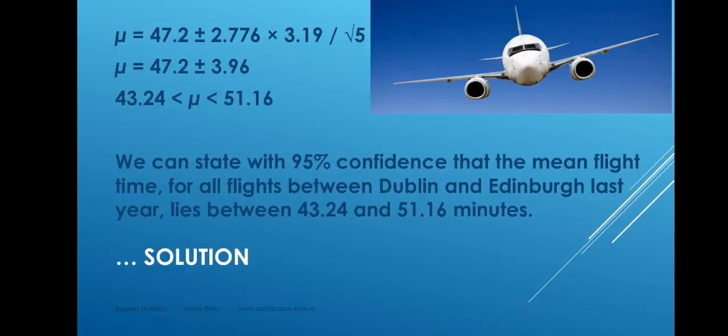So we substitute these numbers — x bar, t, s, and n — into the formula. Everything on the right of the plus-and-minus sign is worked out as 3.96. That's the margin of error. So we have a point estimate of 47.2 minutes and a margin of error of 3.96 minutes, which we can say is not exceeded with 95% confidence. Applying the minus sign gives a lower figure of 43.24, and applying the plus sign gives an upper figure of 51.16. These are the two limits, so we can say that mu, the population mean, lies between these two limits.